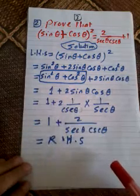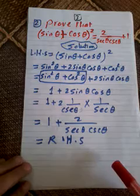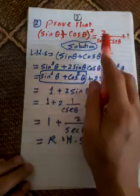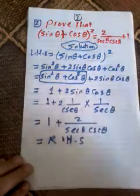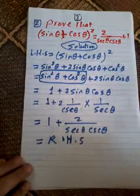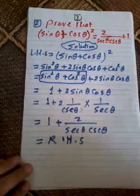Another example: prove that sine theta plus cosine theta, all to the power 2, equals 2 over secant theta times cosecant theta, plus one.